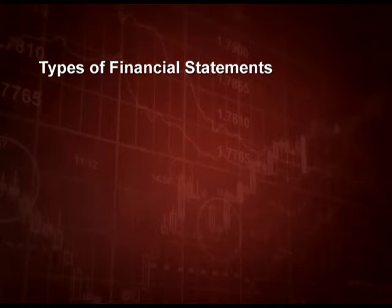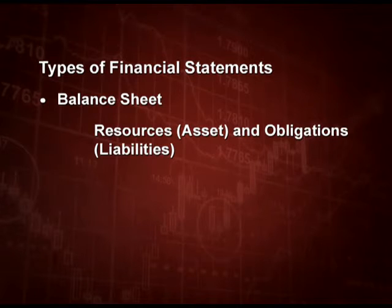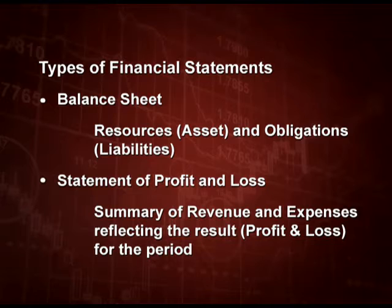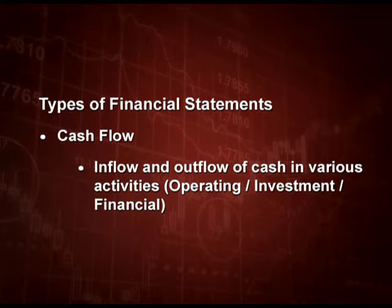Disclosure of important accounting policies the company is following. And if there is any change, they must tell why they have changed those accounting policies. You know accounting standard one where it is written that whatever policies you apply should be applied consistently, and if at all there is a change you should give a note about that. Now, what are the types of financial statement? First is the balance sheet, which tells us about resources that is assets and obligations that is liabilities. Next is statement of profit and loss, which has a summary of all revenue and expenses reflecting the profit or loss for the period. The third statement is cash flow, which tells the inflow and outflow of cash in various activities — operating activity, investing activity and financing activities in detail.